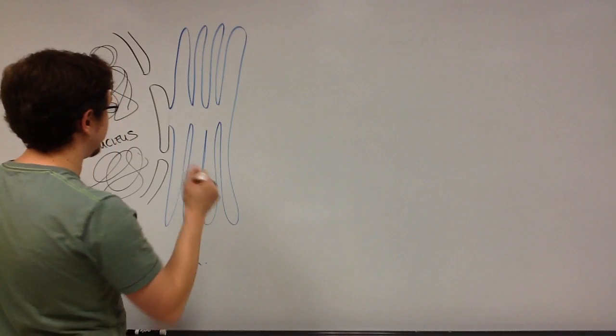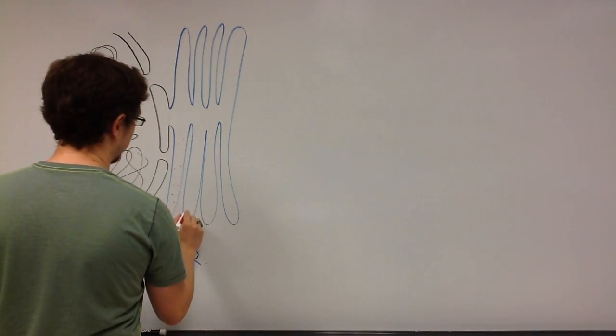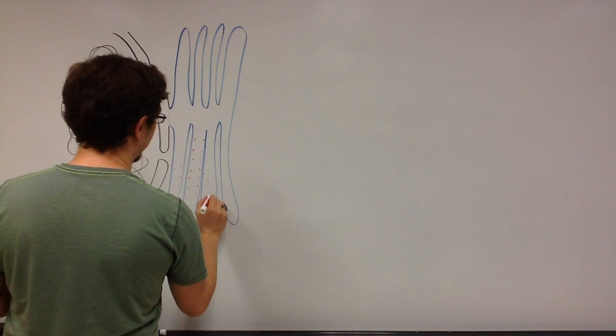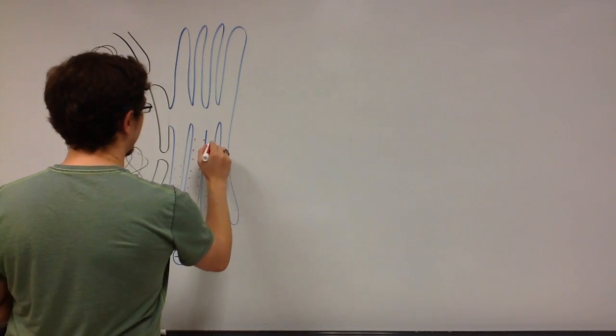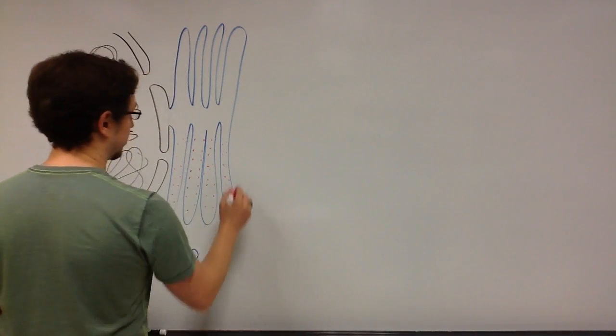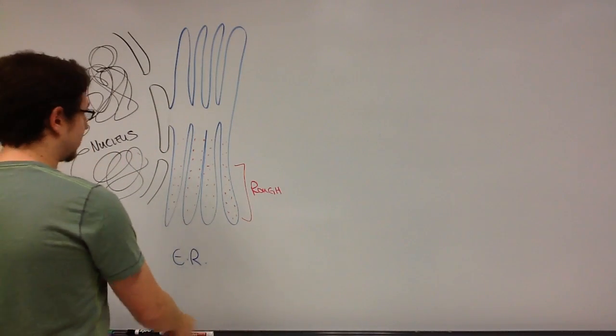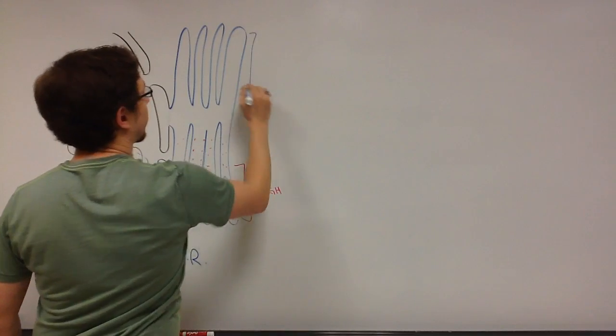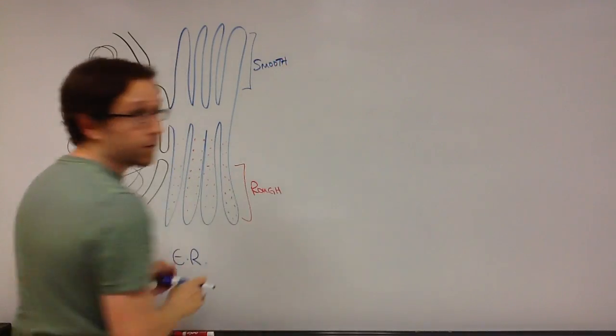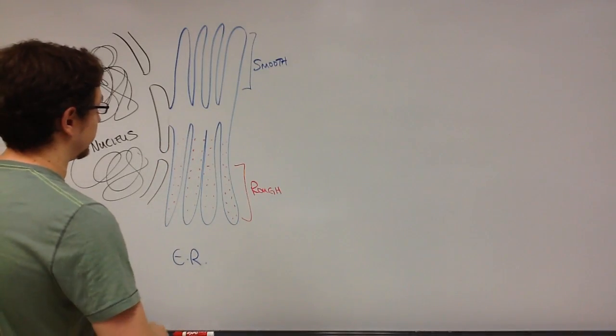Remember that there are two types of endoplasmic reticulum. There is what is known as rough. It's called rough because on the surface of the ER you're going to have these ribosomes. Here's our rough ER. And then up here at the top we have ER with no ribosomes and that's going to be called the smooth ER. These two structures have different functions. Remember that you're going to want to know the difference between the smooth ER and the rough ER in terms of the relative function.